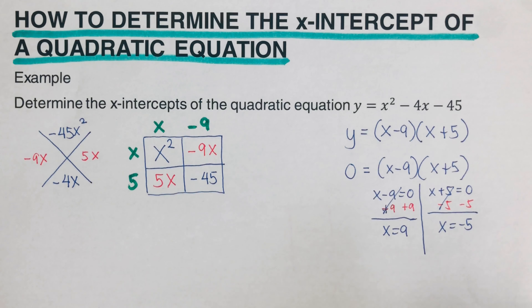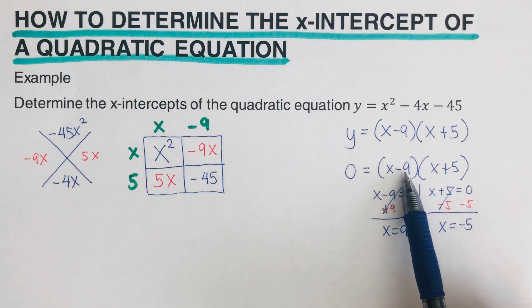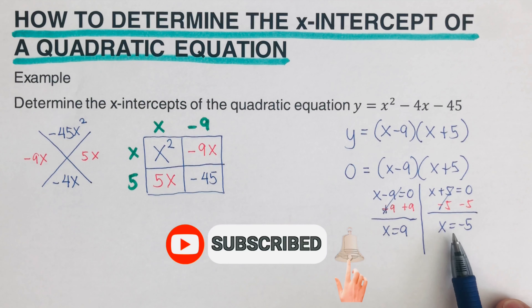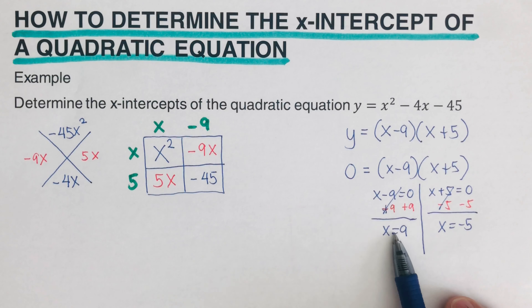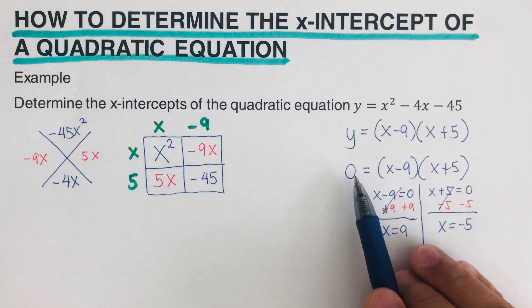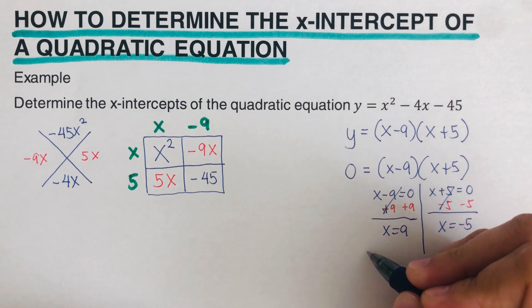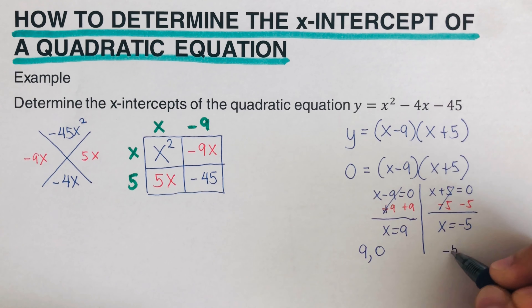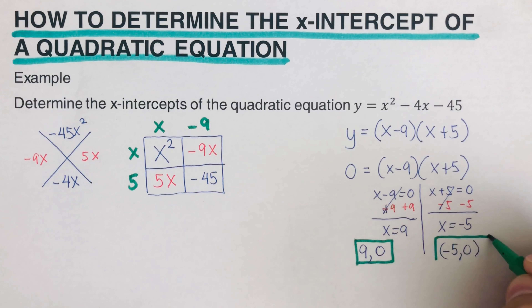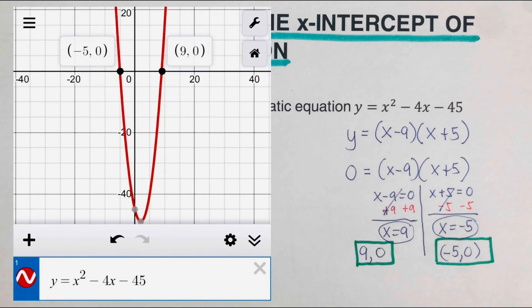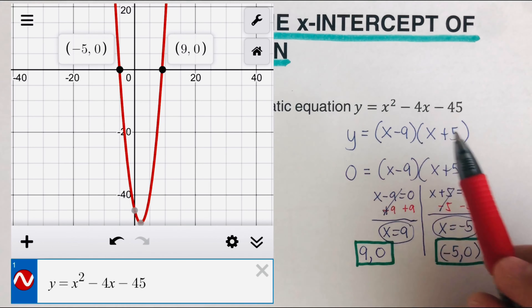Using the zero product property, we set each factor equal to zero and solve. The first x-value is 9 and the second x-value is negative 5. These are the values of x when y equals zero. In coordinate form, the two x-intercepts are (9, 0) and (negative 5, 0).